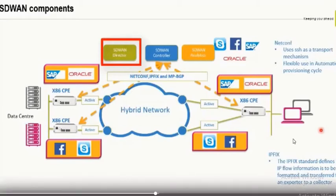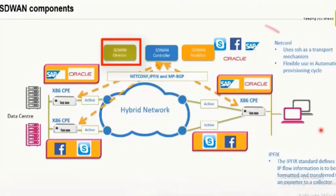How does the Director talk to the appliances? The Director communicates with edge appliances via the controller using a protocol called NetConf. NetConf is a widely used protocol in newer technologies. On a short note, it is a more flexible way of configuring edge appliances compared to SSH — with SSH you just do a copy-paste to bring up a CP router, whereas NetConf gives much more flexibility.